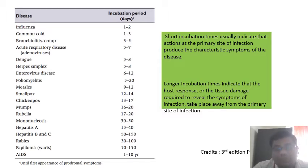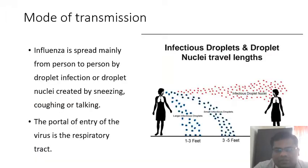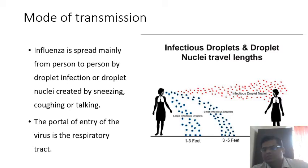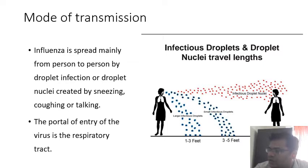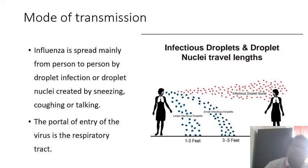The mode of transmission is usually by droplet infection or droplet nuclei. Droplet nuclei are less than five micrometers in size and can hang in the air for a long time, making them easily transmitted. Thankfully, there is no evidence that COVID-19 is spread by droplet nuclei — it is spread by larger droplets within one to three feet, which is why maintaining social distancing of more than one meter is recommended.